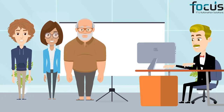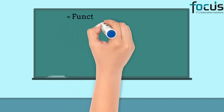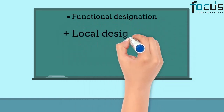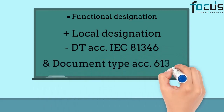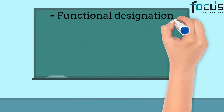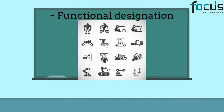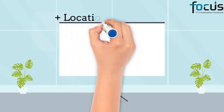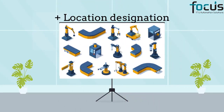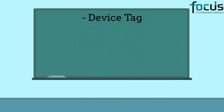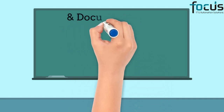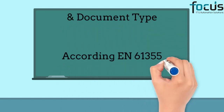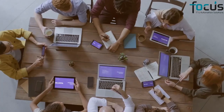The next day, the boss informs his team about the requirements of the project. This should consist of a function designation, location designation, and device tag according to IEC 81346. Furthermore, the document type according to EN 61355. The function designation should identify the individual functions of the machine, the location designation the place where the component is located on the machine, and the device tag should be taken from the table of IEC 81346 and consists of 2 identification letters. The document type is created according to EN 61355, and so now everyone knows what to do.